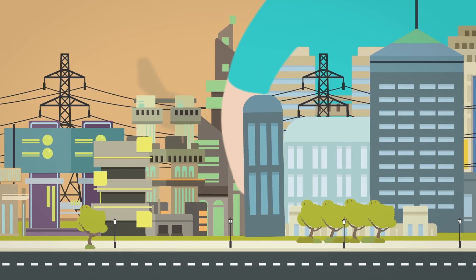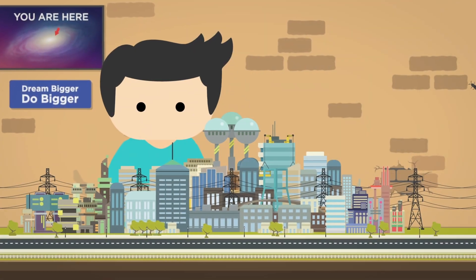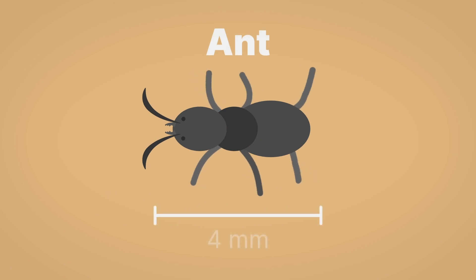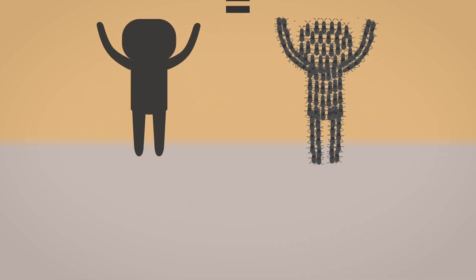To see this super tiny world, let's start by looking at the small stuff around us. We often think we're small, right? But compare that to a tiny ant. Ants are just a few millimeters long. You'd need 15 million ants to weigh as much as one average human.